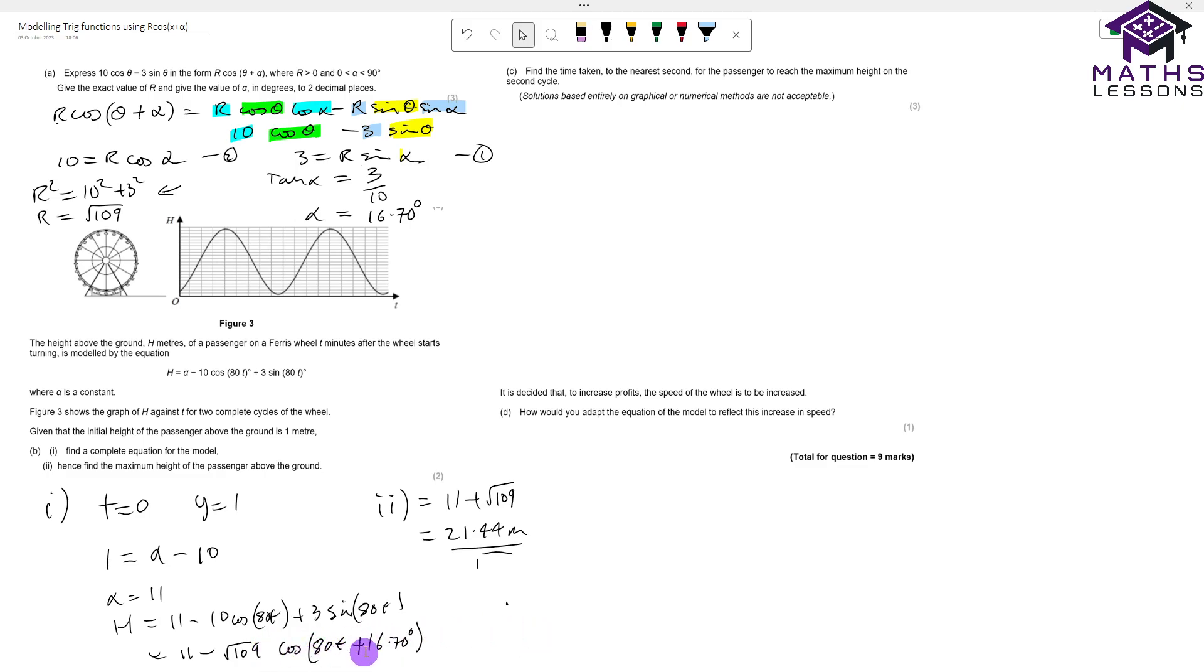Let's just remember, for the maximum height we want this to be its maximum negative value. Cos's maximum negative value is minus one—cos oscillates between one and minus one. So when we come down to here, we're going to actually need cos to be minus, because we're going to then take this away. Therefore we get plus √109 as our biggest value to add on to 11 and get this maximum height.